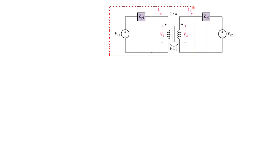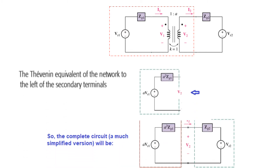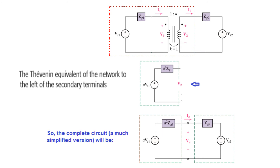We have found an equivalent for the primary part. Now if we plug this in and join it to the secondary side, we get the complete equivalent circuit without a transformer. This is a much simplified version from which we can easily calculate any of the parameters we want.